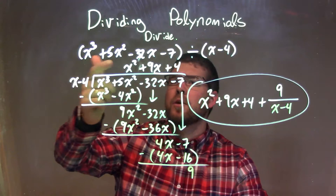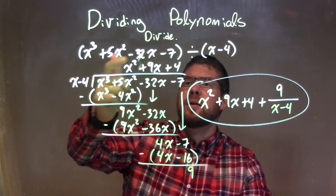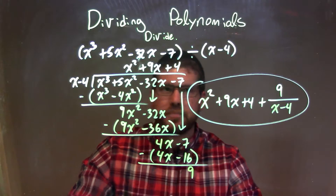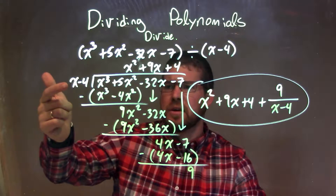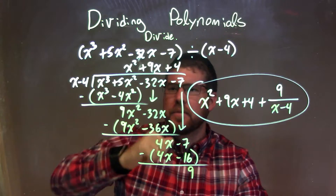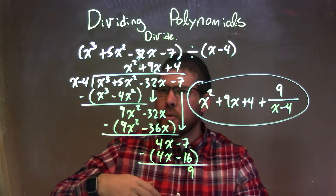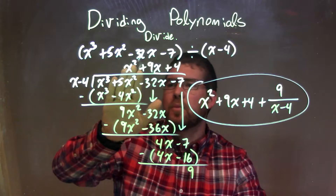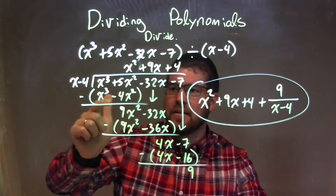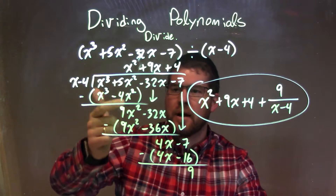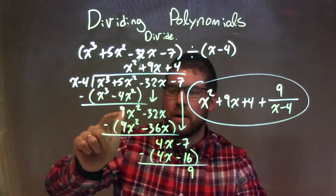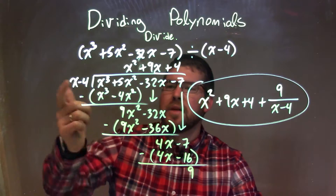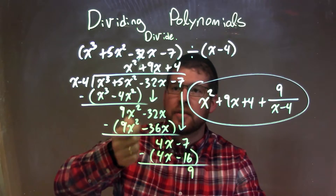So let's recap. We're given x to the third plus 5x squared minus 32x minus 7, and we're dividing that by x minus 4. Rearrange it to have long division here. My divisor goes into my dividend, and I ask myself: what times x gives me x to the third? That's x squared. Multiply x squared at both parts to get x to the third minus 4x squared. Subtracted it, we got 9x squared. We brought it down to minus 32x. Same question again: what times x gives me 9x squared? And that's just 9x.